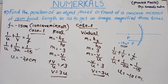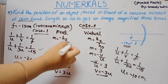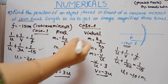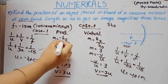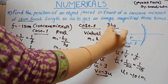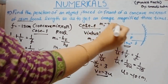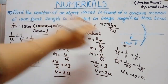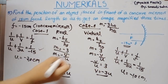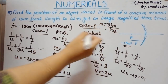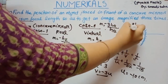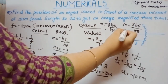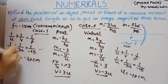To summarize: for real image case, HI = 3HO so M = −3HO/HO = −3. For virtual image case, HI = 3HO so M = 3HO/HO = +3. So object distance is −20 cm for real magnified image and −10 cm for virtual magnified image.